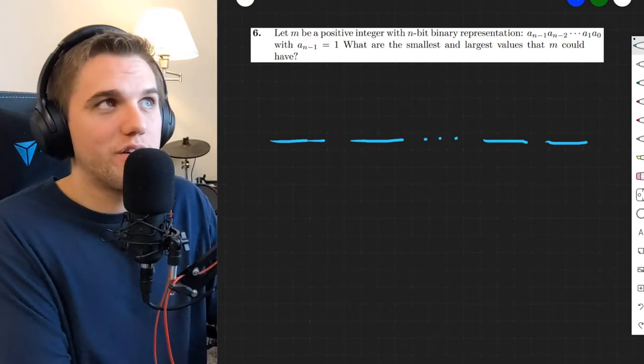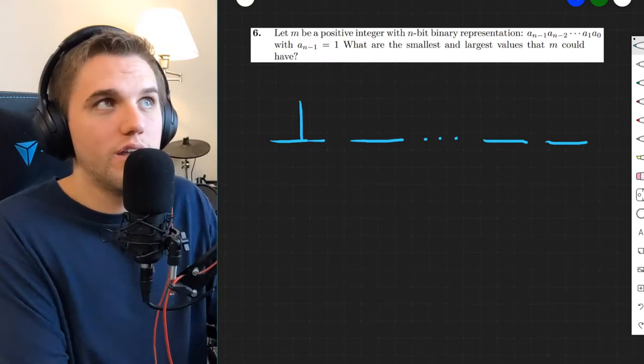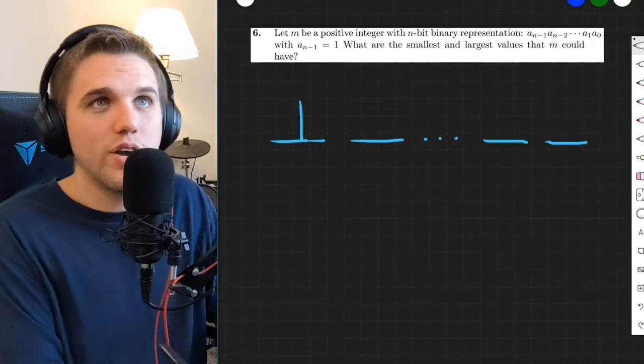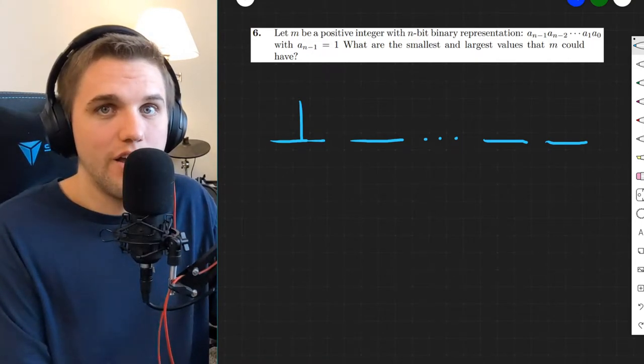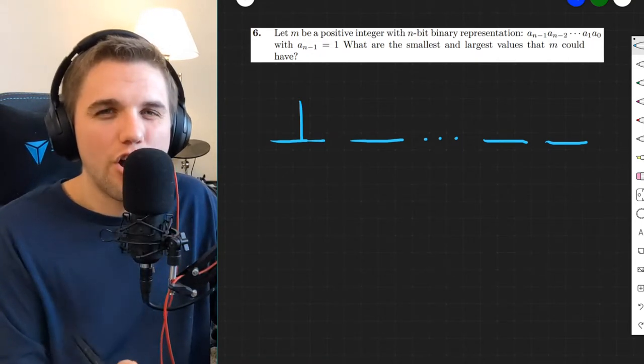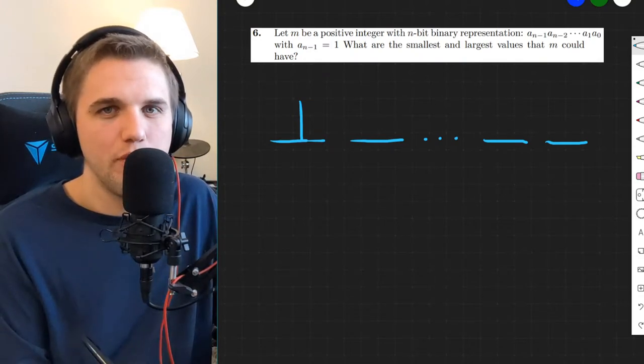Suppose I have a binary number where the very left bit is a 1, and then you get to decide what the other bits are. If you were to construct as large of a binary number as possible, what would you put in the rest of the placeholders?